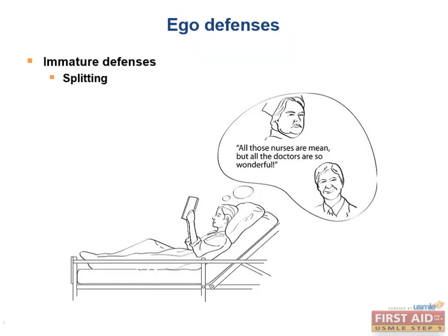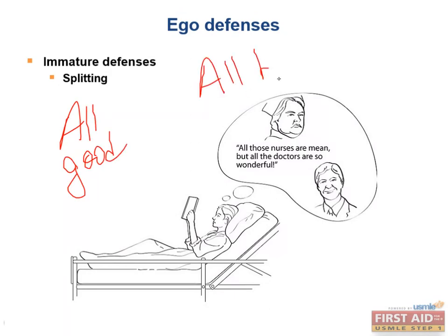Next we have splitting, which refers to an individual who views other individuals or groups of people as either all good or all bad, with nothing in between. This is classically seen in patients with borderline personality disorder. An example of splitting is a patient who believes all nurses are cold and insensitive but that all doctors are warm and friendly.